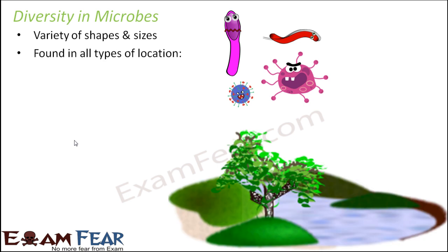If you talk about the location where they are found, they are found in many different types of location. For example, they are found in the soil — on the surface as well as deep inside. They are also found in water and in air, covering almost all places. In fact, they can survive in extreme temperatures — some at temperatures as high as 100 degrees Celsius, some at extremely low temperatures, even in snow-covered areas. Some tolerate highly acidic environments while others tolerate highly basic environments. Different microbes survive in different types of environments, and that is why microbes can generally be found in all types of locations.